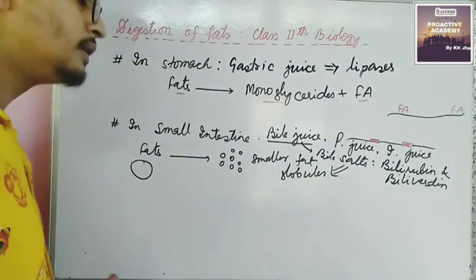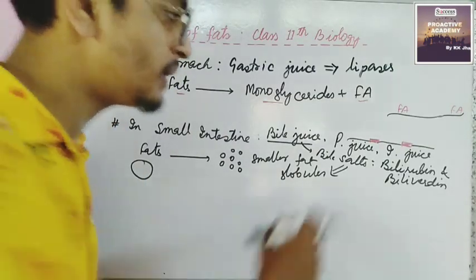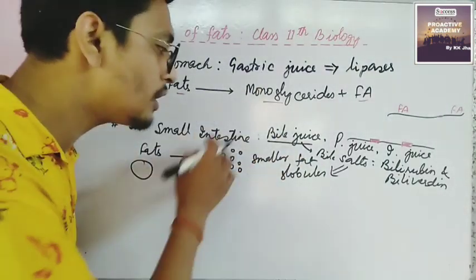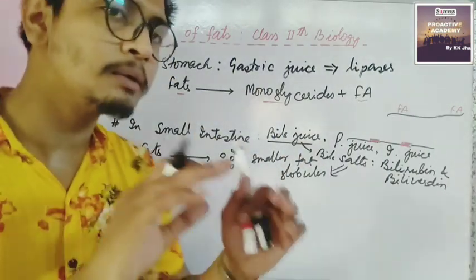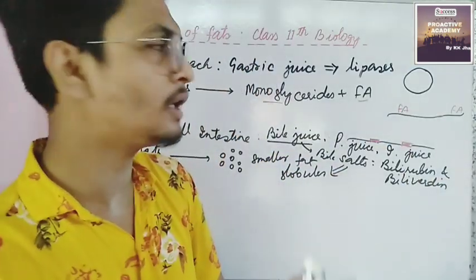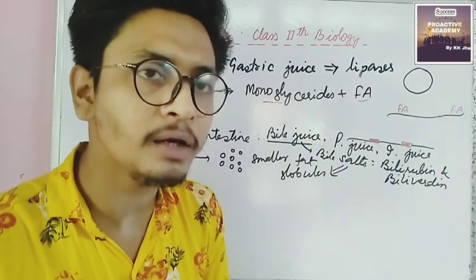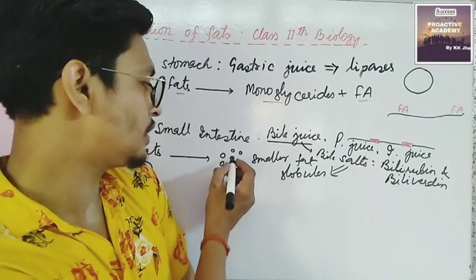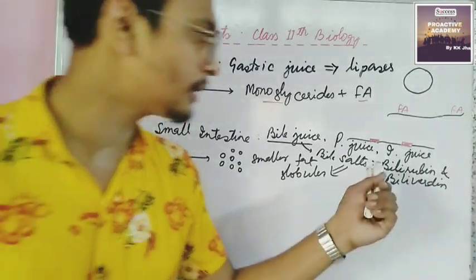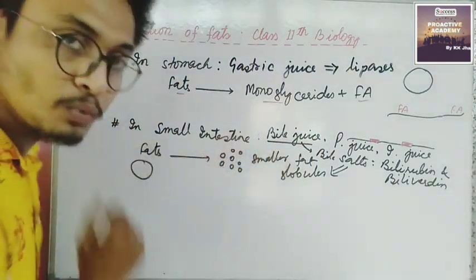Why are fats converted into smaller fat globules? Why are they broken down? So that the pancreatic lipase can act on these smaller fat globules efficiently. Because if the fat molecule is very large, pancreatic lipase will not be able to act efficiently on it. That is why the fats are first broken down into smaller pieces.